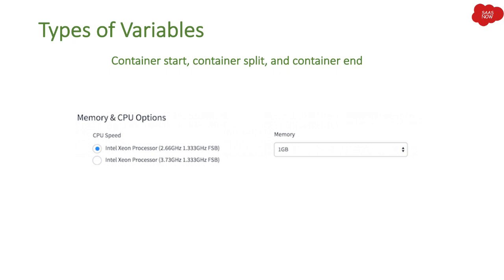Then we have some other really important variables with great functionality: Container Start, Container Split, and Container End. These three variables let you group other variables into a bucket. For example, you can see CPU Speed and Memory displayed side by side on the left and right — this is achieved using Container Start, Container Split, and Container End.